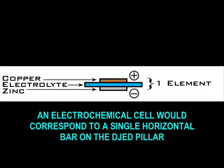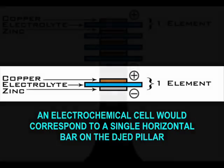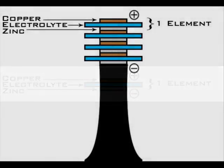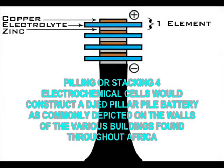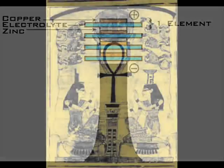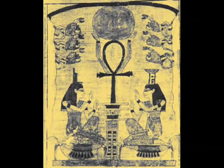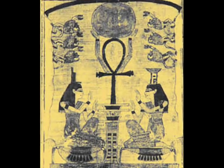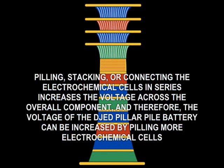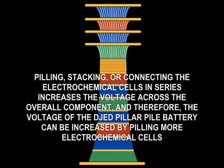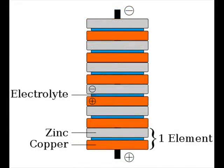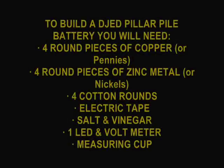An electrochemical cell would correspond to a single horizontal bar on the Z-Pillar, and piling or stacking four electrochemical cells would construct a Z-Pillar power battery, as commonly depicted on the walls of various buildings found throughout Africa. Piling, stacking, or connecting electrochemical cells in series increases the voltage across the overall component, and therefore the voltage of the Z-Pillar power battery can be increased by piling more electrochemical cells.